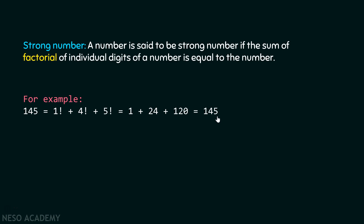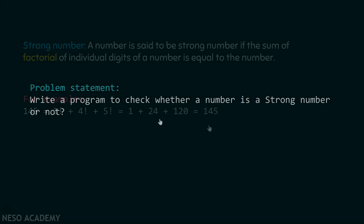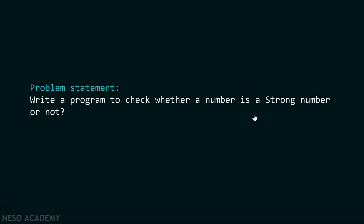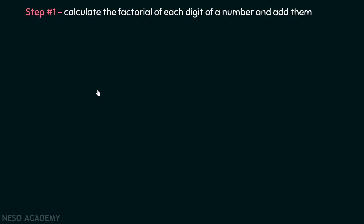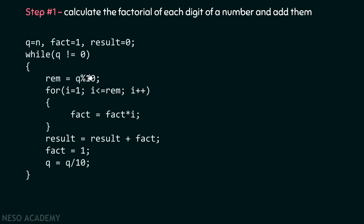After understanding strong numbers and factorials, let's get back to our question. We need to write a program to check whether a number is a strong number or not. Step one: calculate the factorial of each digit of the number and add them together.